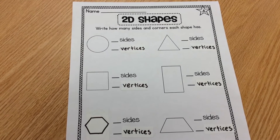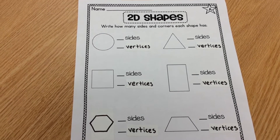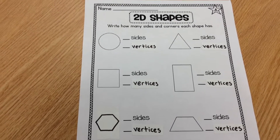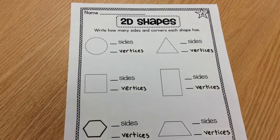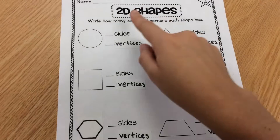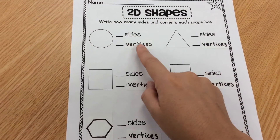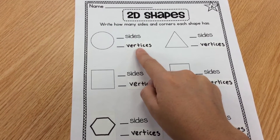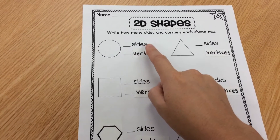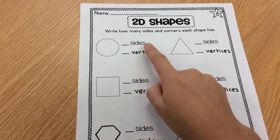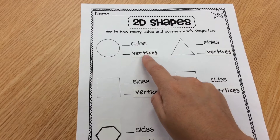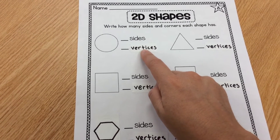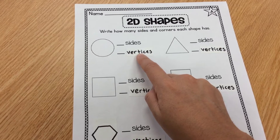After you have watched the learning video about 2D shapes, which are flat shapes, you are going to then discover how many sides and how many vertices your shapes have. Sides are the straight lines. Vertices are the corners, the points where the lines come together. You learned about that in your video.